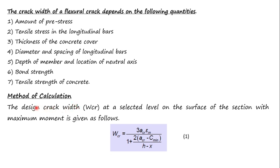Moving to the method of calculation: the design crack width W_CR at a selected level on the surface of the section with maximum moment is given as W_CR = 3·a_cr·ε_m / [1 + 2·(a_cr − c_min) / (h − x)], as Equation 1.